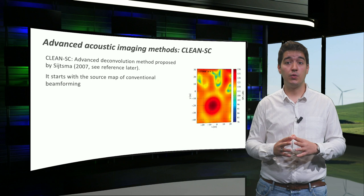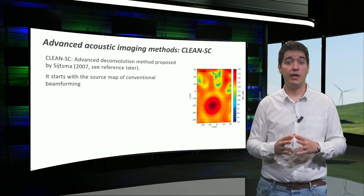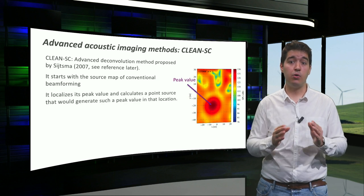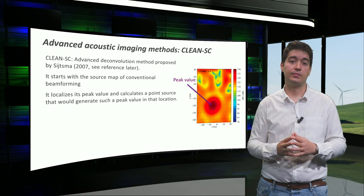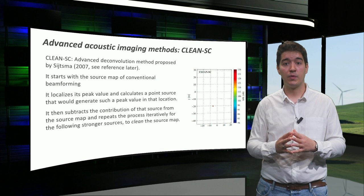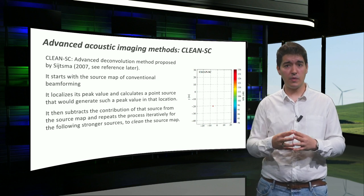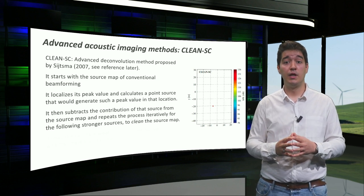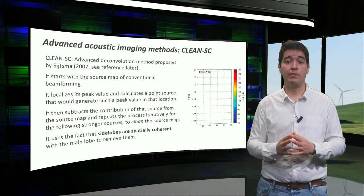This technique starts with the source map of conventional beamforming. It localizes its peak value and calculates a point source that would generate that peak value in that location. It then subtracts the contribution of that sound source from the source map and repeats the process iteratively by removing the following stronger sources and cleaning the source map. This method uses the fact that side lobes are spatially coherent with the main lobe.